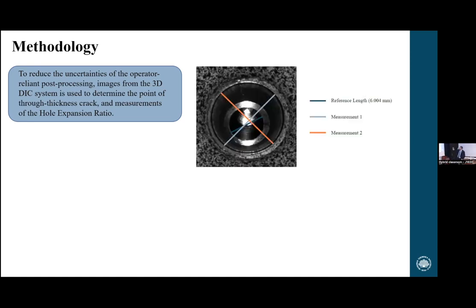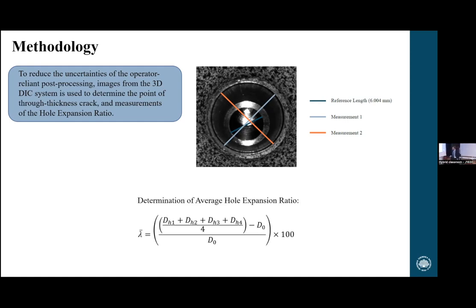By having DIC photos, we can do pixel mapping inside software instead of measuring with sliding calipers, allowing measurements inside software by counting pixels in two cross-sectional diameters and comparing to a known reference length to get the actual distance. Because we have a 3D DIC system with two cameras, we now have four diameter measurements. I slightly altered the expansion ratio expression to find the expanded hole diameter averaged over these four measurements, then multiply by 100 to get a percentage increase.